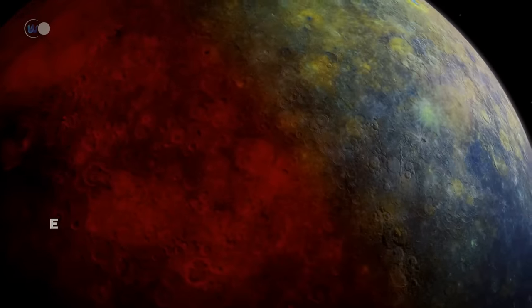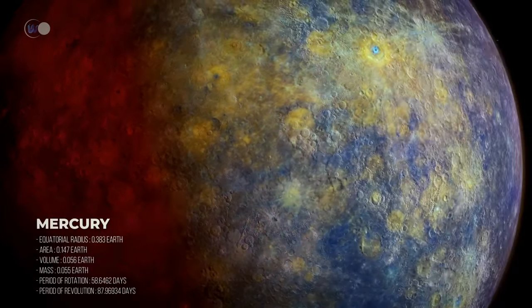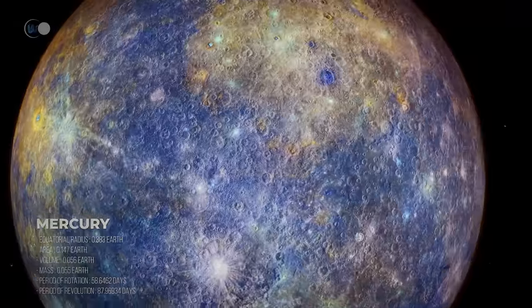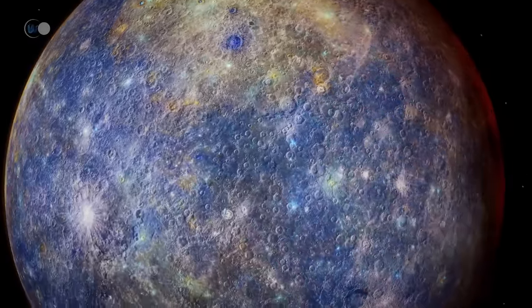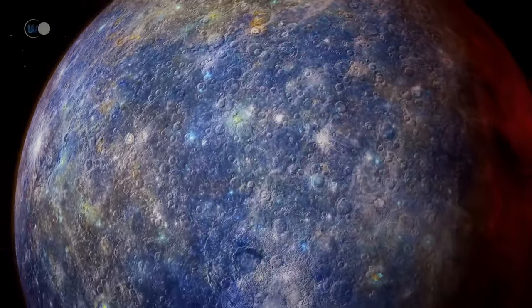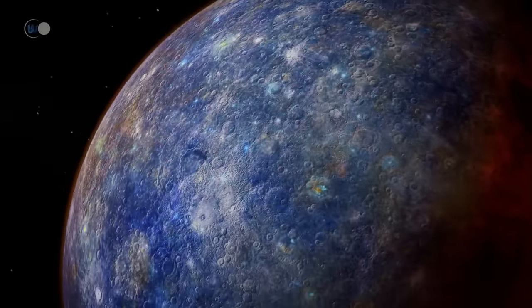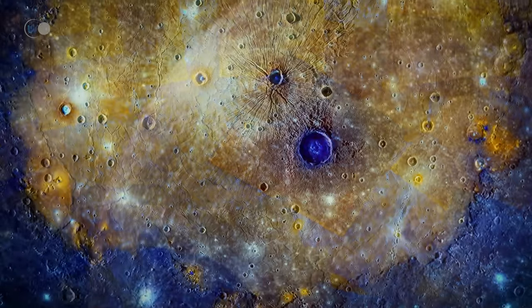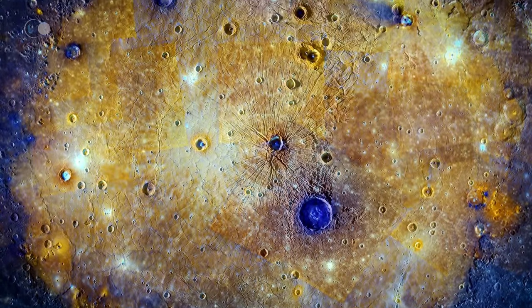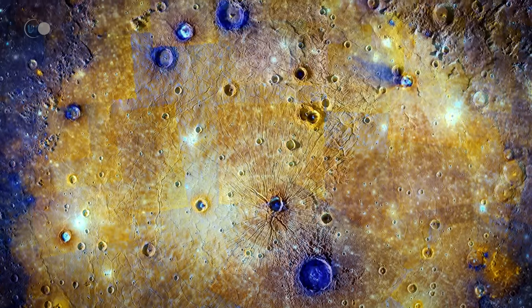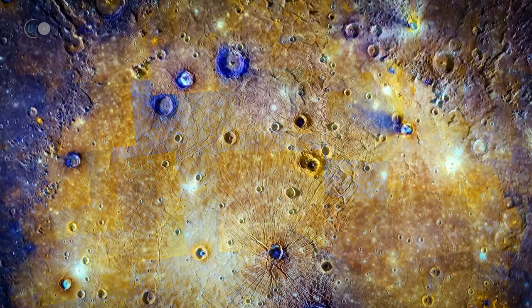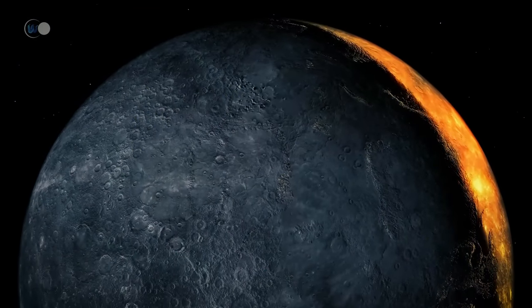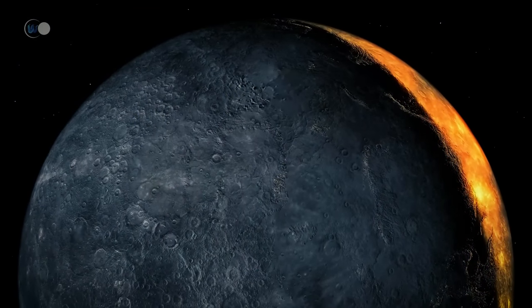Mercury is the closest planet to the Sun. It looks like a ball of iron surrounded by a thin rocky mantle. Its surface is, like that of the Moon, covered with impact craters. The Caloris Basin is one of the best-known impacts, so large that it could contain almost the whole of Texas. Apart from the craters and plains, compression faults appear, which form cliffs, and can reach 3 kilometers or 2 miles in height.